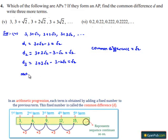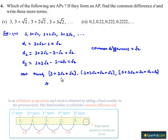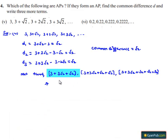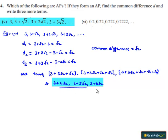The next three terms in the series can be obtained by adding the common difference to the preceding term. So the first required term is 3 + 3√2 + √2 = 3 + 4√2, the second is 3 + 5√2, and the third is 3 + 6√2. Therefore, the required three terms are 3 + 4√2, 3 + 5√2, and 3 + 6√2.